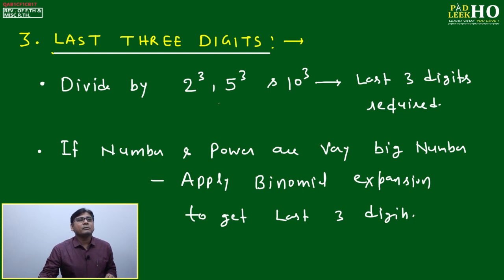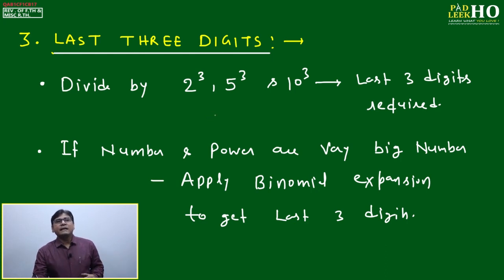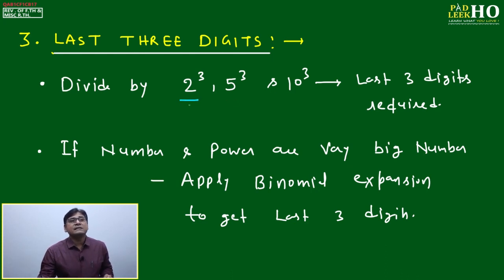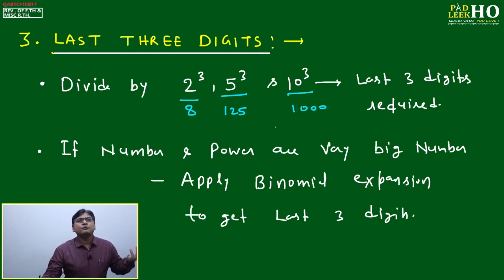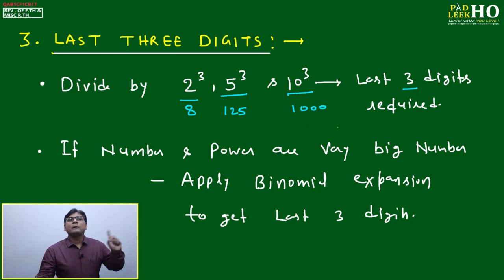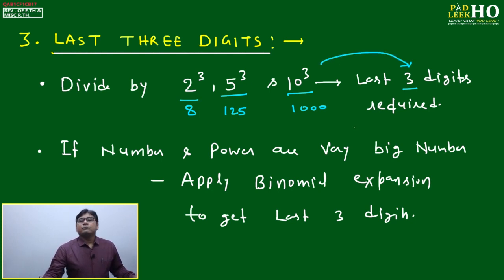Now the third point: the Last Three Digit Method. This is used to find the remainder when dividing by 2^3 = 8, 5^3 = 125, or 10^3 = 1000. Since 2^n, 5^n, and 10^n deal with the last n digits, for n = 3 we must find the last three digits using binomial expansion — there's no alternative.